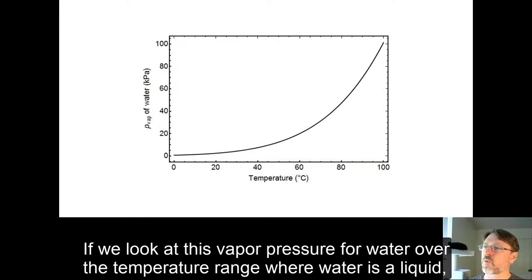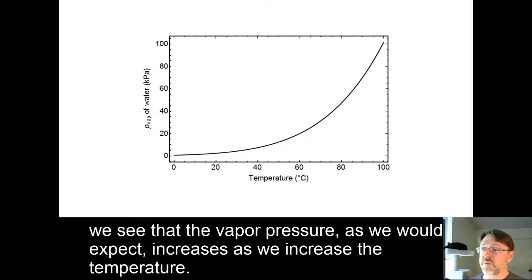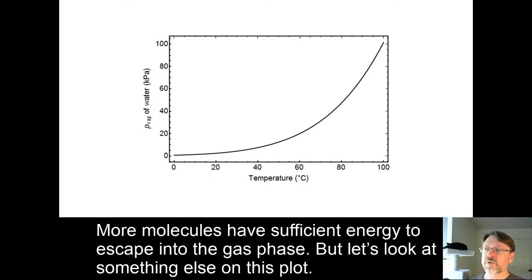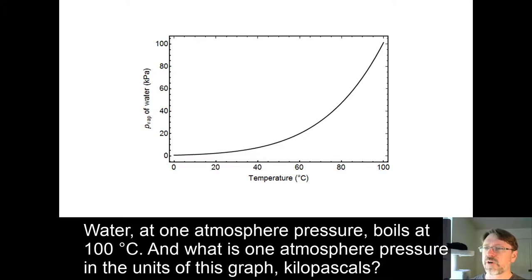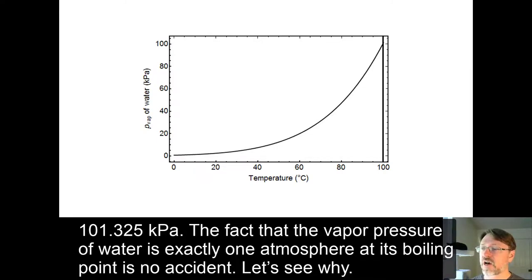If we look at this vapor pressure for water over the temperature range where water is a liquid, we see that the vapor pressure, as we would expect, increases as we increase the temperature. More molecules have sufficient energy to escape into the gas phase. Let's look at something else on this plot. Water at 1 atmosphere pressure boils at 100°C. What is 1 atmosphere pressure in the units on this graph, kilopascals? 101.325 kilopascals. The fact that the vapor pressure of water is exactly 1 atmosphere at its boiling point is no accident.